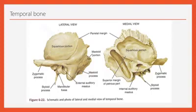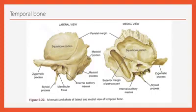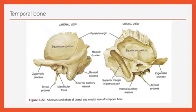In the tympanic part there is presence of the external auditory or acoustic meatus. It is 1.6 cm in length and it is the passage for collection of sound waves. The petrous part is wedge-shaped or triangular. The apex lies anteriorly and the base lies posteriorly. In the petrous part there are three surfaces — the anterior surface, posterior surface, and the inferior surface — and three borders: the superior border, the posterior border, and the anterior border.